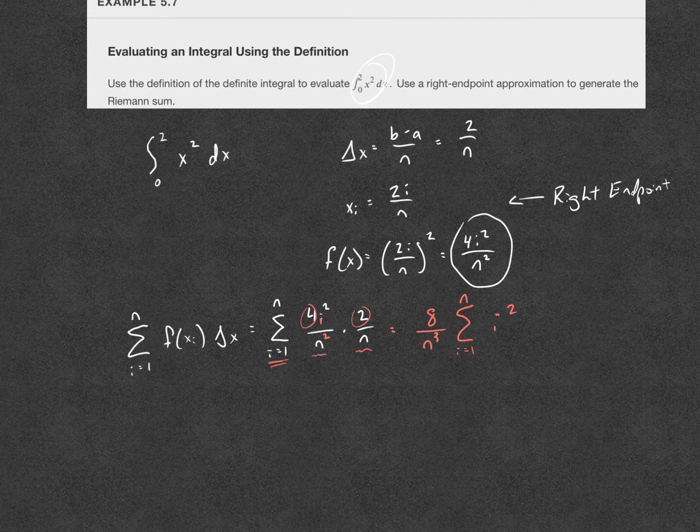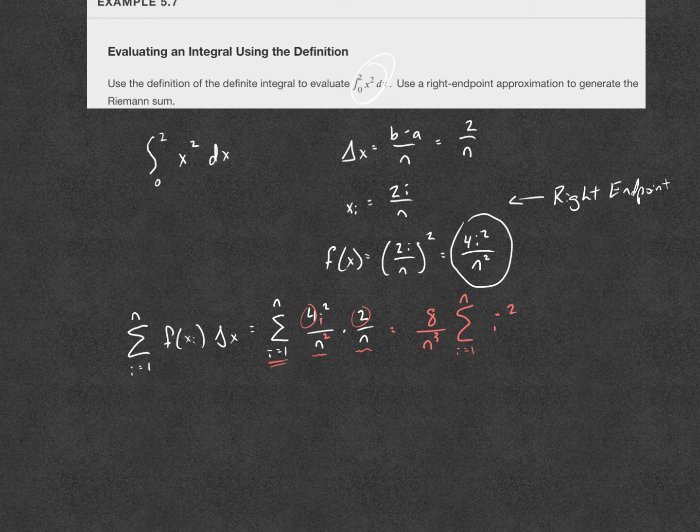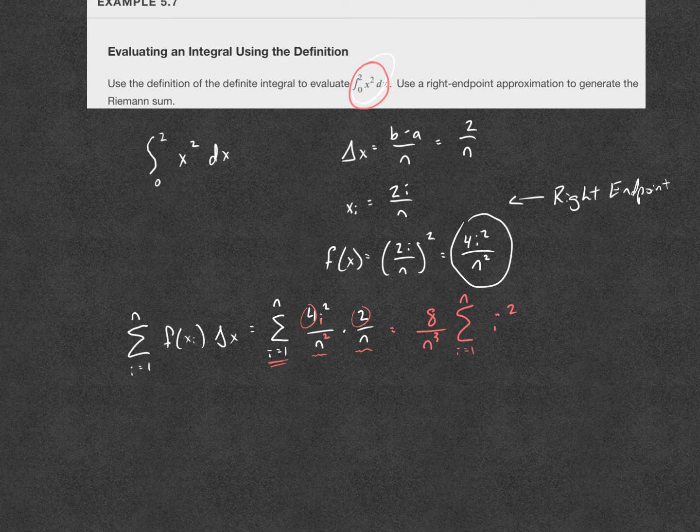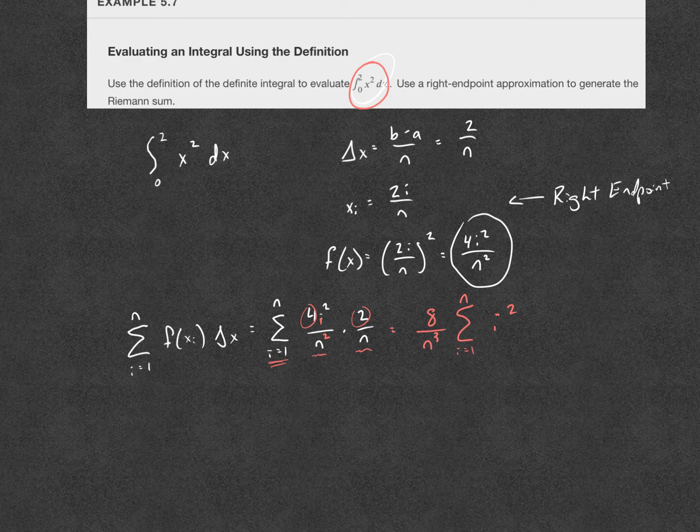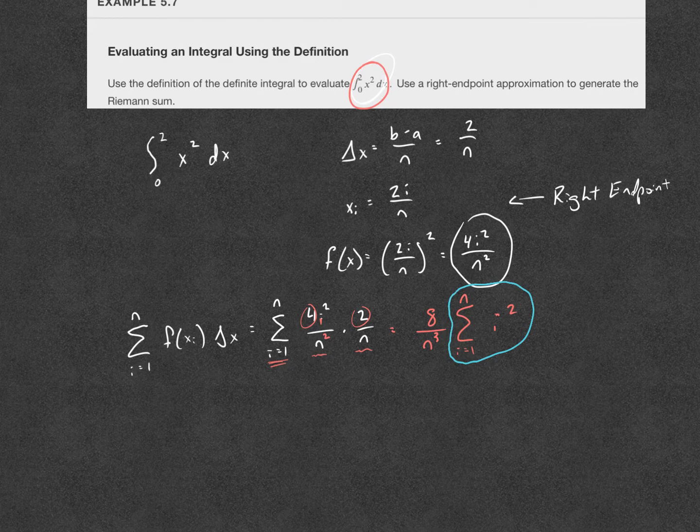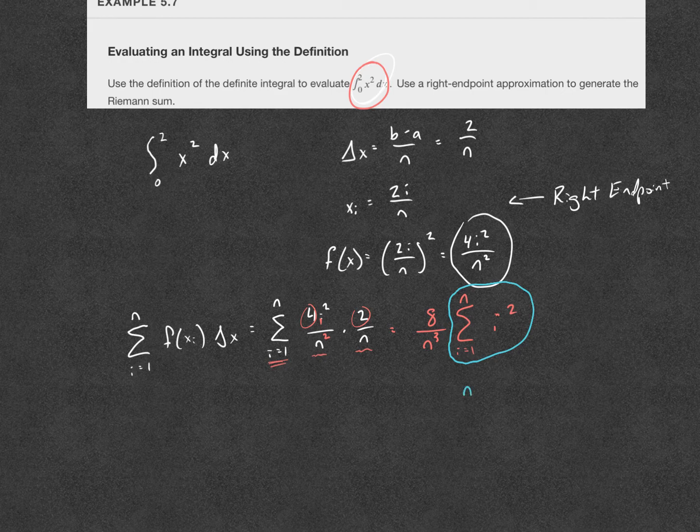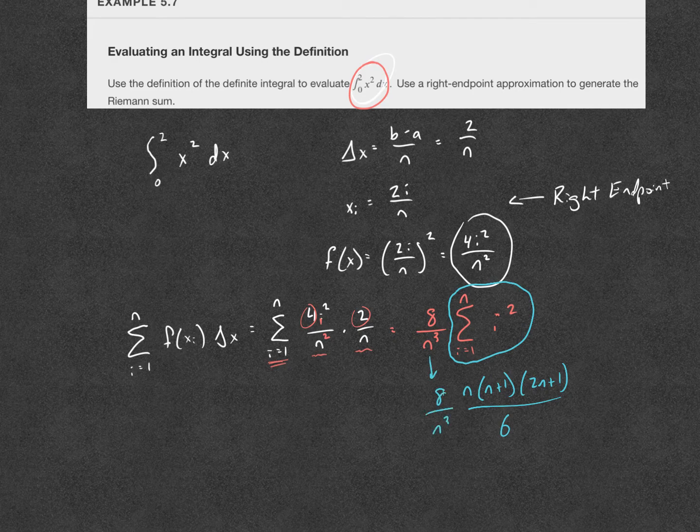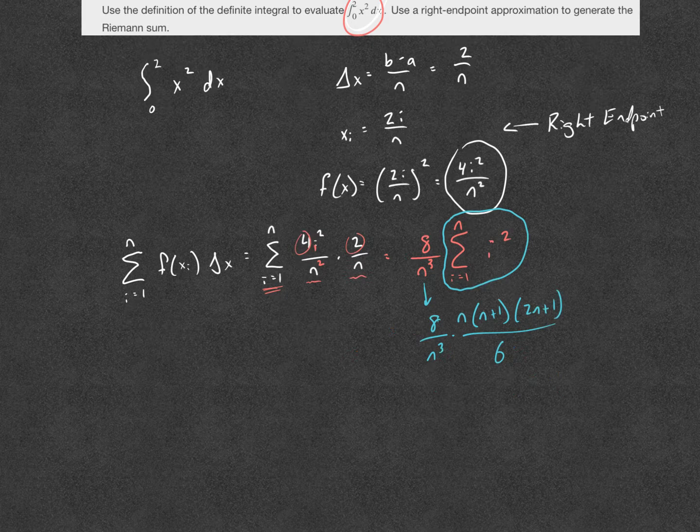And what we're left with is the sum from i equals 1 to n of i squared. That's the only thing left inside of my Riemann sum. If you plugged in 2 for n, that would give you the area underneath your quadratic function using 2 rectangles. If you substituted in 4 for n, it would give you a more accurate area using 4 rectangles. Now, if you remember from the last section, we have a formula for that. The sum from i equals 1 to n of i squared is equal to n times n plus 1 times 2n plus 1 all over 6, and don't forget my 8 over n to the third power.